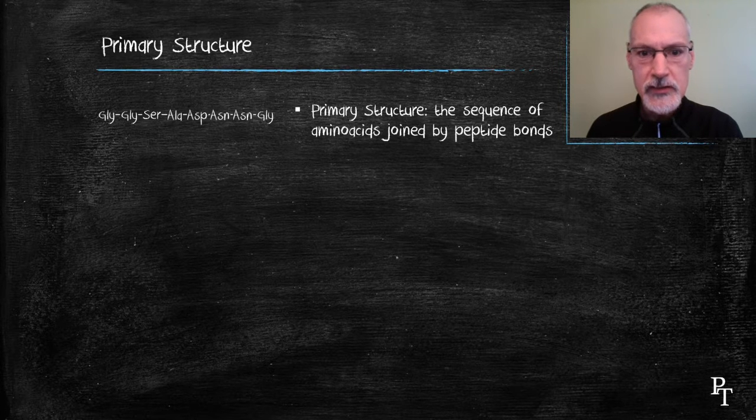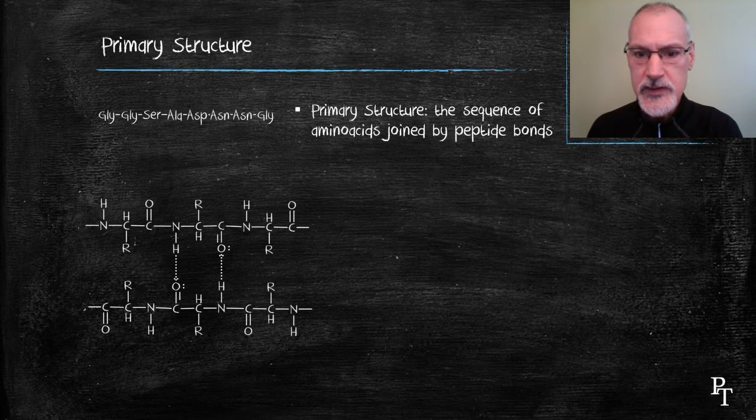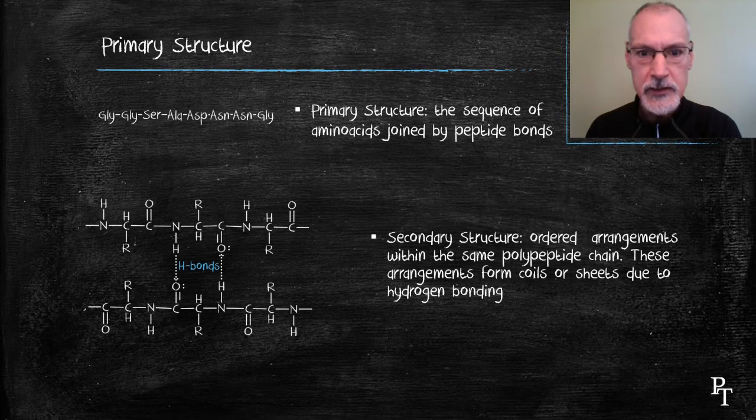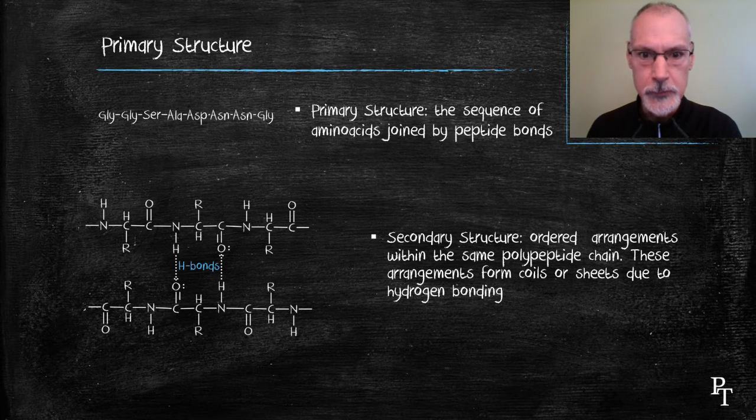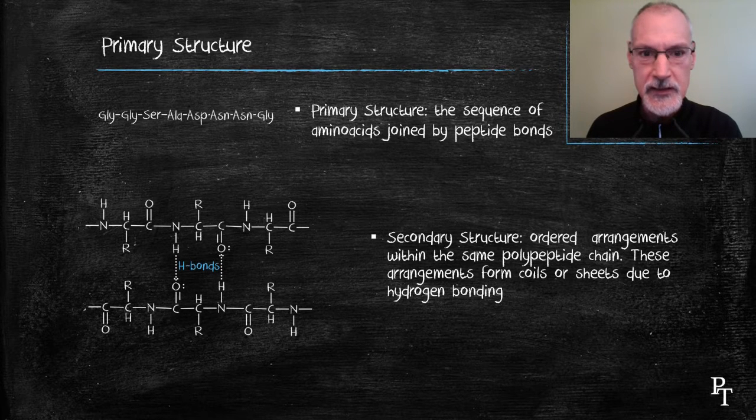The next level of organization involves some bonding that can take place within the chain. In particular, the hydrogen bonding that can take place. That hydrogen bonding arises from the presence of the amine and carboxyl groups that are present in the amino acid, and that leads to hydrogen bonding that can take place.